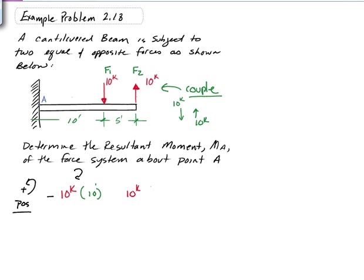And it is 15 feet from point A, and it is trying to spin in a counterclockwise sense, so that would give a positive. And that is equal to the moment about point A.